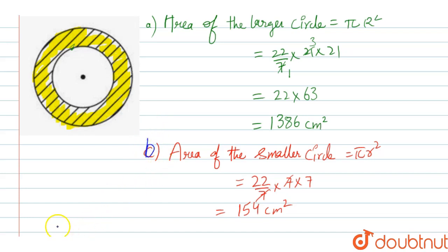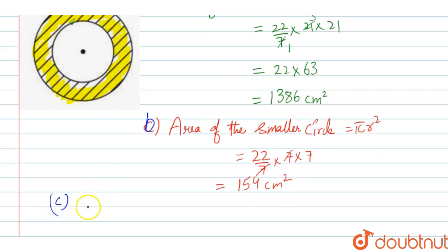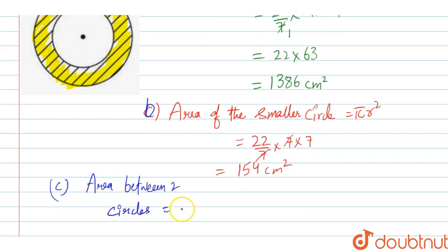Okay, so area of the area between the two circles: area of the larger circle minus area of the smaller circle, as simple as that.